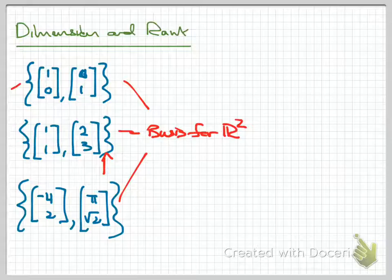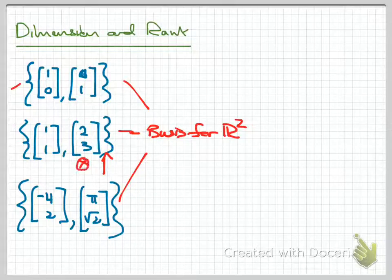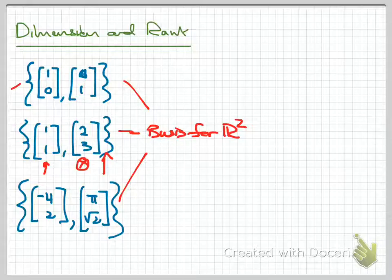A set of three or more vectors from R2 is automatically linearly dependent, which disqualifies it from being a basis. That set might still span all of R2, but it wouldn't be a basis due to linear dependence. On the other hand, if I removed a vector and kept only one, that single non-zero vector would be linearly independent but wouldn't span all of R2—it would only span a line.